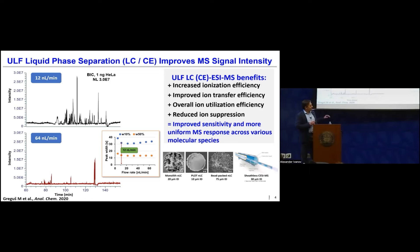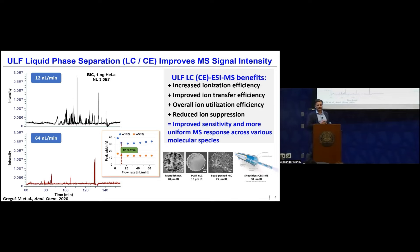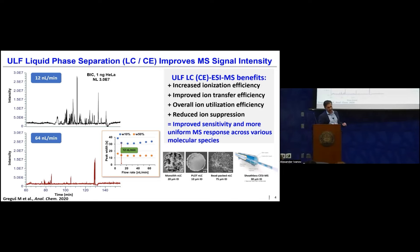We observe these trends using different modalities of separation with different types of columns. We typically pack or polymerize them in-house: open tubular columns, especially porous layer open tubular columns; monolithic columns; and packed columns. We also use capillary electrophoresis coupled to mass spectrometry. The main reasons for improving signal in mass spectrometry are better ion transfer efficiency, better ionization efficiency, decreased ion suppression, and increased separation efficiency.